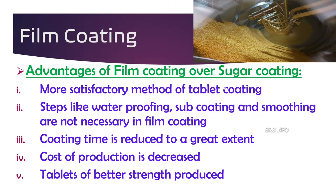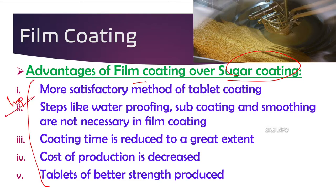The process is almost the same as sugar coating, but there are some advantages of film coating over sugar coating. These are very important points from an examination perspective. The first advantage is that film coating is a more satisfactory method of tablet coating. Steps like waterproofing, sub-coating, and smoothing are not necessary in film coating — these steps can be skipped.